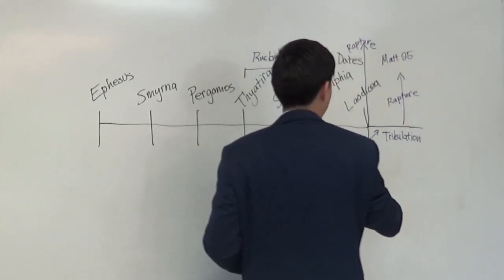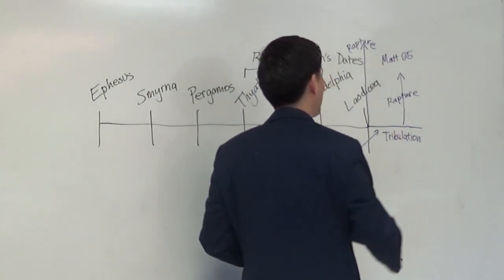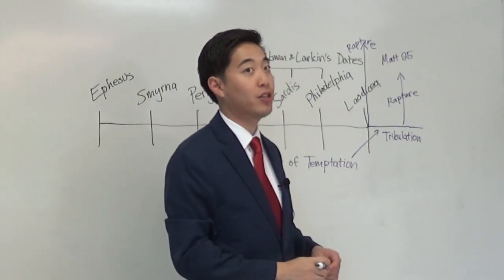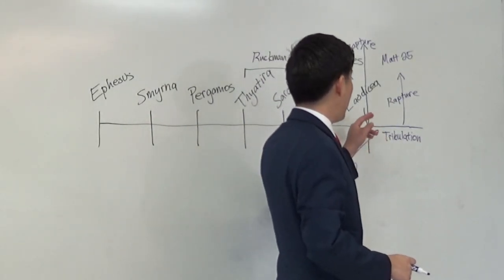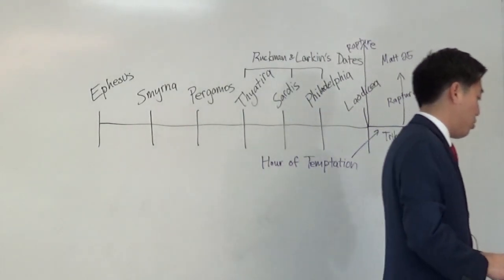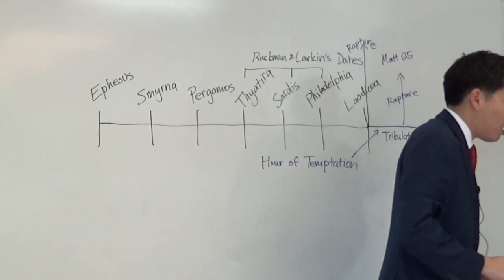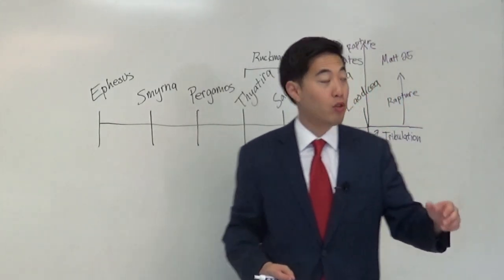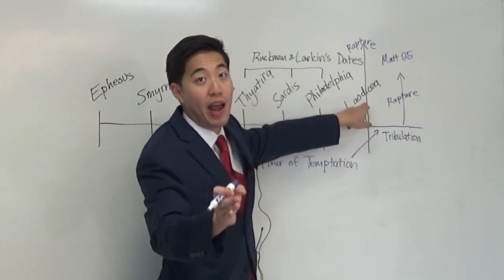Remember, there's a pre-tribulation rapture for Christians, and then there's a tribulation rapture for tribulation saints. I'm not going to expound that again. Now because of this pre-tribulation rapture, the Bible says, Behold, I come quickly. So Jesus is coming really soon. We're expecting this any moment. We're seeing the signs of the times. That's why we're getting ready right now.